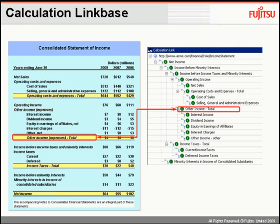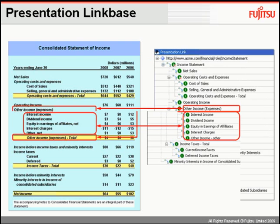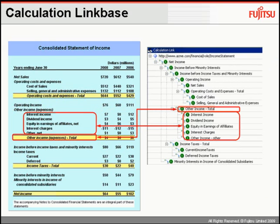Another link base is the calculation link base. This is the one designed to allow us to show calculations — to show what the totals and subtotals should be. In this example, you can see that Other Income Total is the sum of interest income, dividend income, equity in earnings of affiliates, et cetera. Looking back on the left-hand side again, we can see that this is the structure of the calculations on that side.